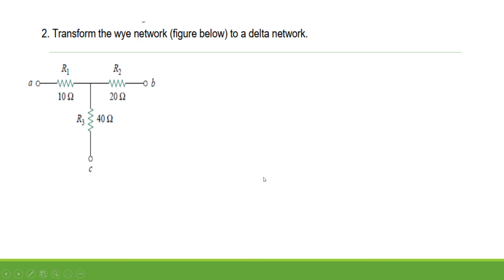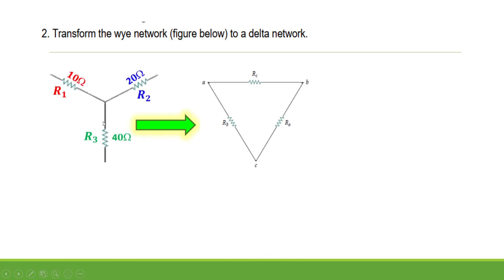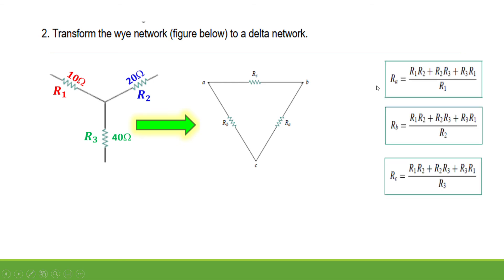In problem number 2, we are required to transform or convert the Y network, as you can see in the figure below, to a Delta network. This network can be simulated like this: R sub 1 is 10 Ohms, R sub 2 is 20 Ohms, R sub 3 is 40 Ohms. We are going to convert this Y network into a Delta network using these equations.